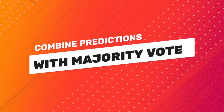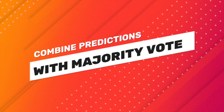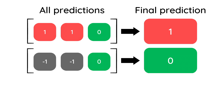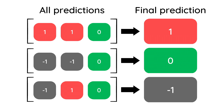One straightforward way to handle these cases is to use a majority vote. If there are two ones and one zero, then the prediction will be one. Negative one is ignored if there are no ties. If there are ties, then negative one is returned.